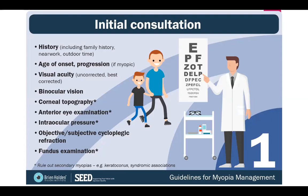Those additional tests are really to rule out another problem. For example, a patient with keratoconus would have high myopia, but that might not be regular myopia — it's myopia due to the irregular curvature of the front surface of the eye. So you really want to establish what type of myopia it is: is it due to a secondary cause or is it just myopia?